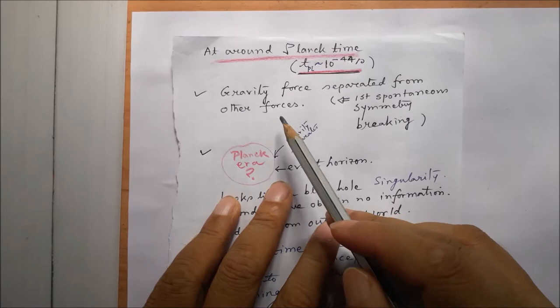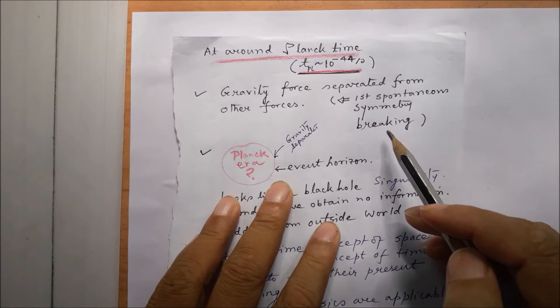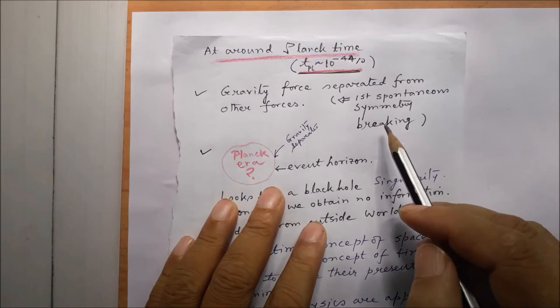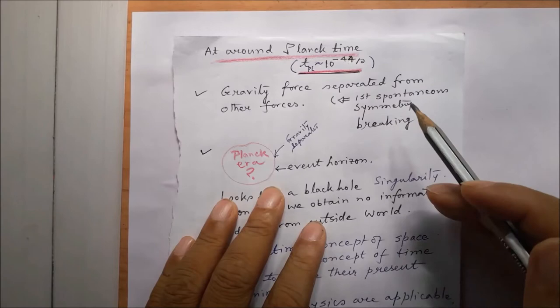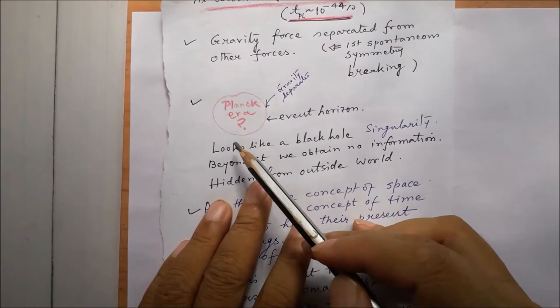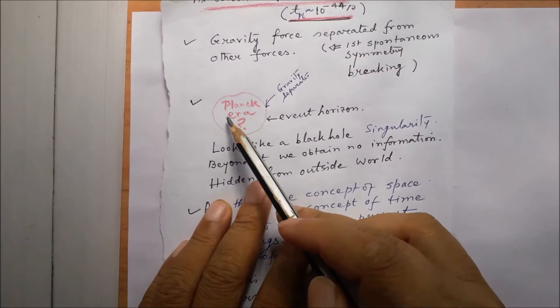This separation of gravity from other forces is referred to as spontaneous symmetry breaking, which we will discuss later in some lecture. We will also speak about the various types of forces in a coming lecture. This Planck era, as mentioned in the previous lecture, looks like a black hole — there is a singularity there, and beyond this event horizon we have no information; this region is hidden from the outside world.